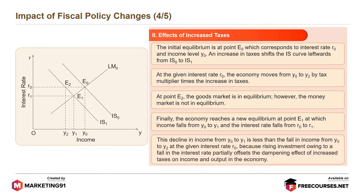This decline in income from Y0 to Y1 is less than the fall in income from Y0 to Y2 at the given interest rate R0, because rising investment owing to a fall in the interest rate partially offsets the dampening effect of increased taxes on income and output in the economy.